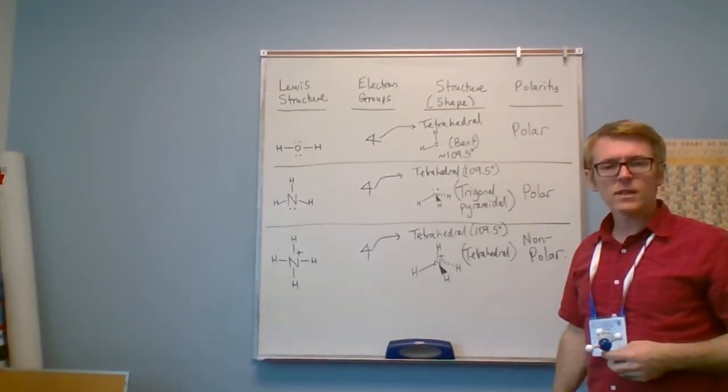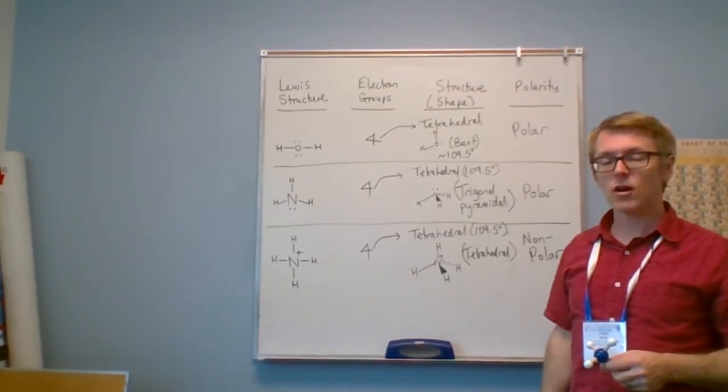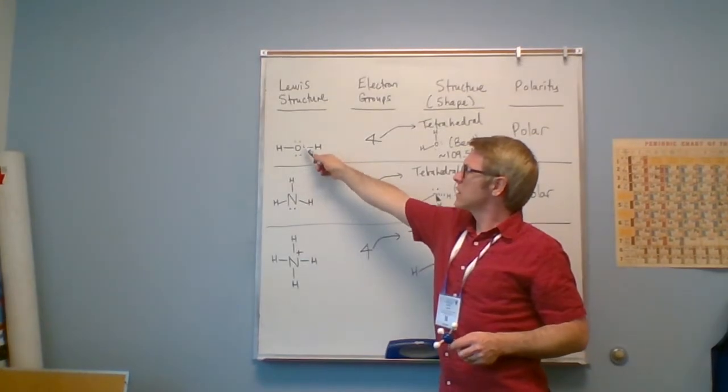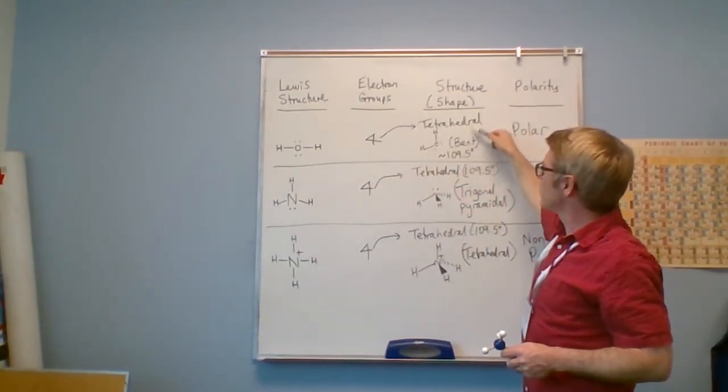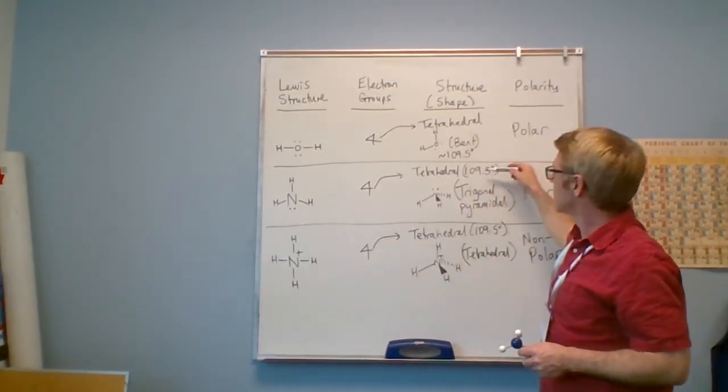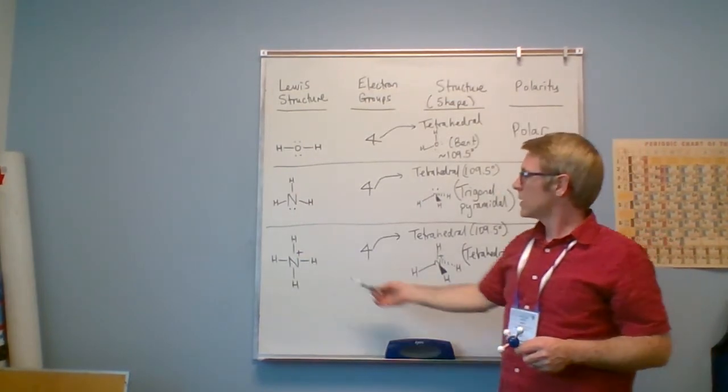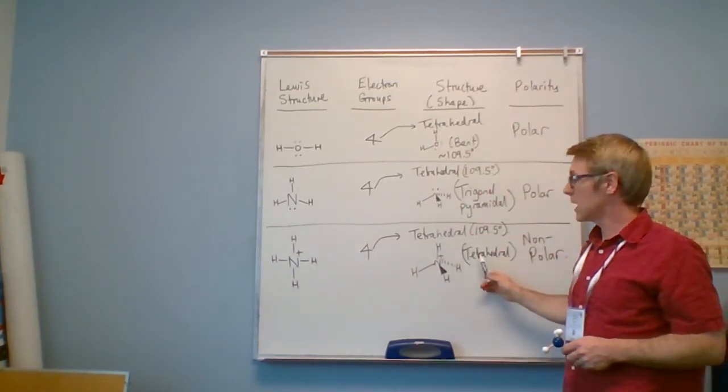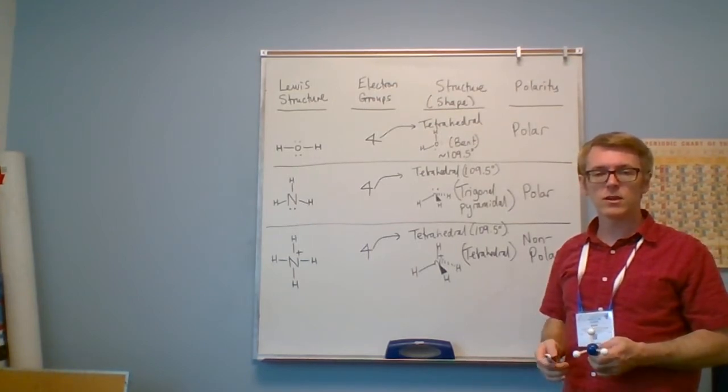Before concluding this video let's look at the presence or absence of dots on the central atom. Notice when water had dots on the central atom the structure and the shape were different. Notice when ammonia had dots on the central atom the structure and the shape were different. Notice ammonium has no dots on the central atom - the structure and the shape are the same. This is a rule and this is something that you should look out for.